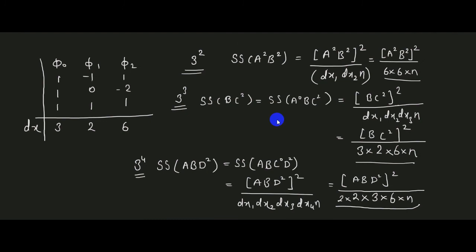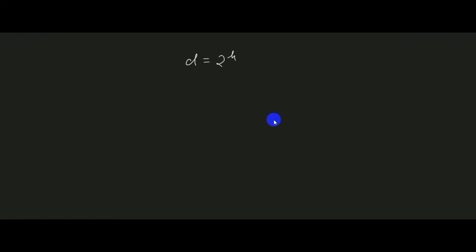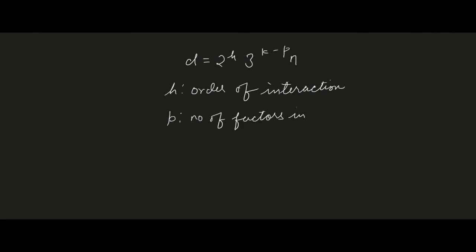This is how we can find the sum of squares for any effect in any 3^k design, whether 3², 3³, or 3⁴. One can also use the formula D = 2^h × 3^(k-p) × n as the formula for the divisor, where h is the order of the interaction and p is the number of factors in the interaction at intermediate level.